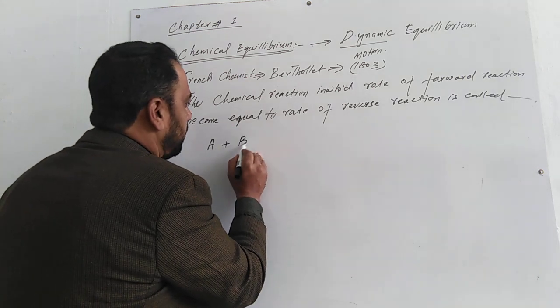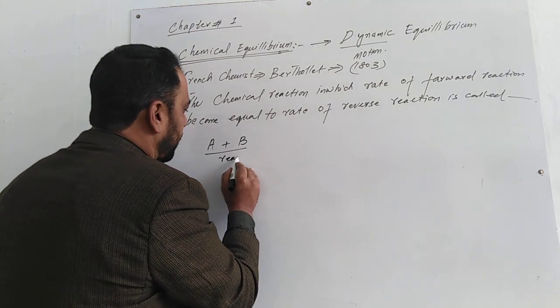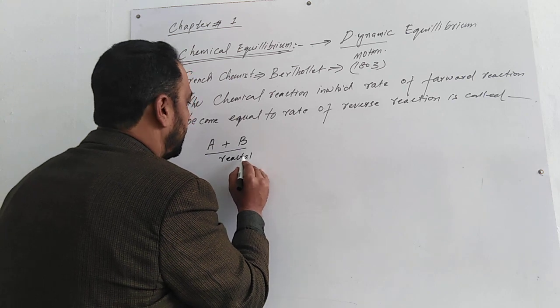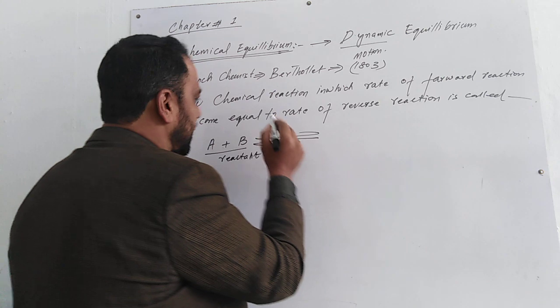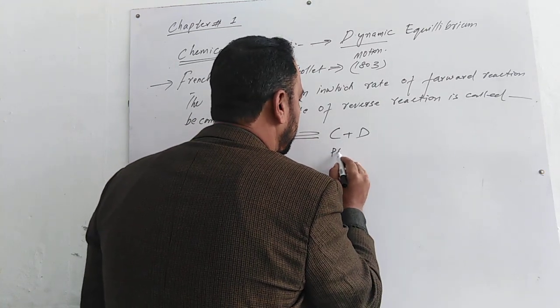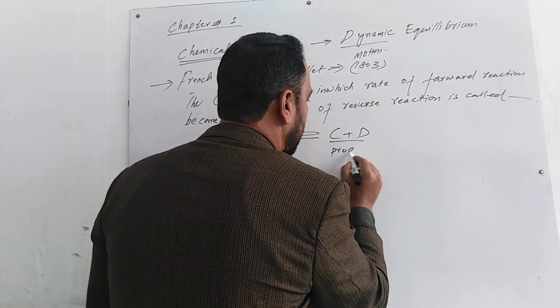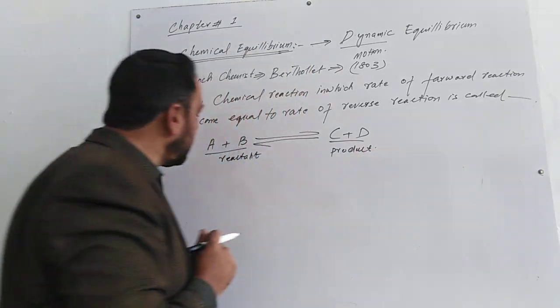A plus B are reactants. This changes with double arrow to C plus D, which are products. So initially, the amount of reactant will be higher.